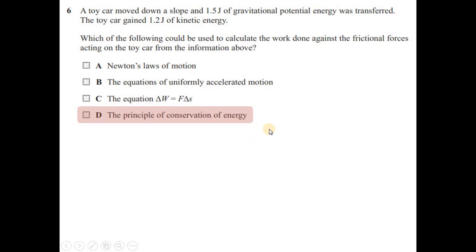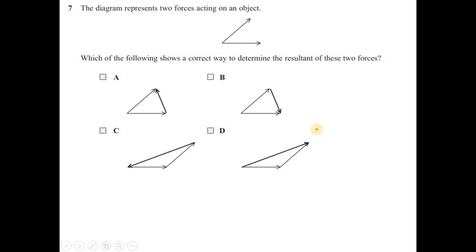Question 7: the diagram shows two forces F1 and F2 acting on an object. Which diagram correctly determines the resultant? To find the resultant of two forces we use a vector diagram with the head-to-tail rule. One choice is to join the tail of F2 to the head of F1, giving a resultant.